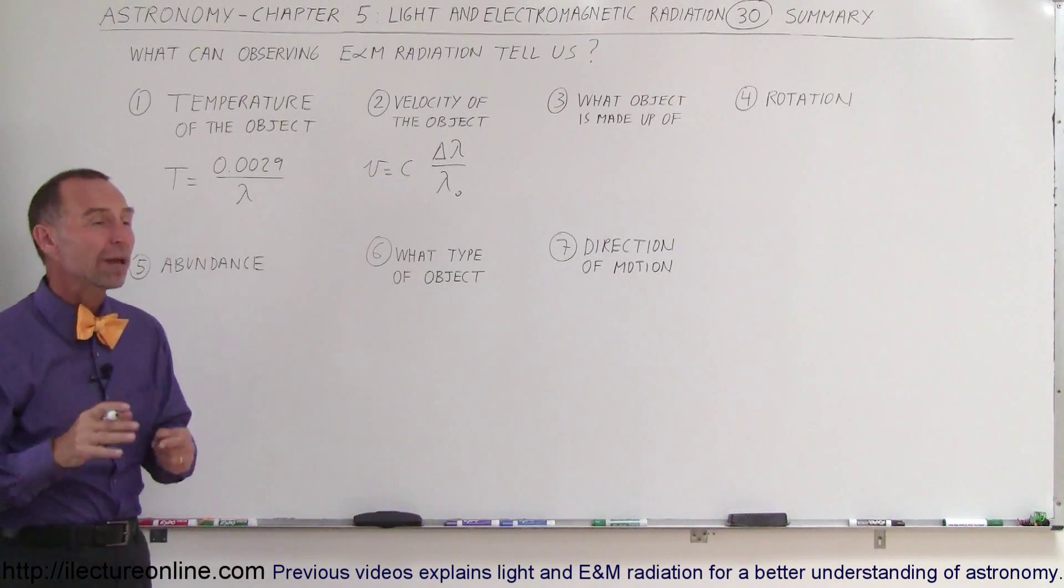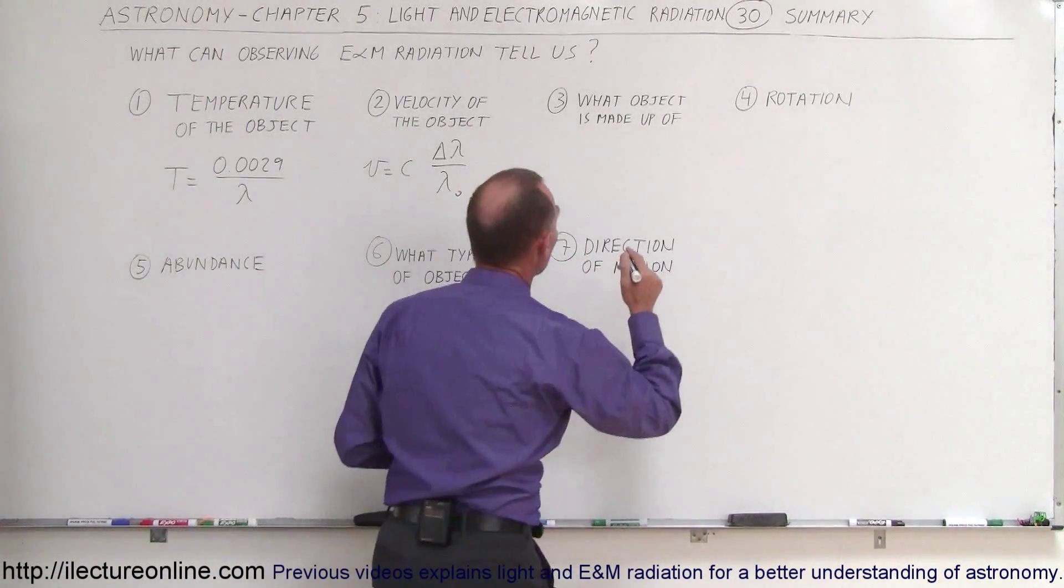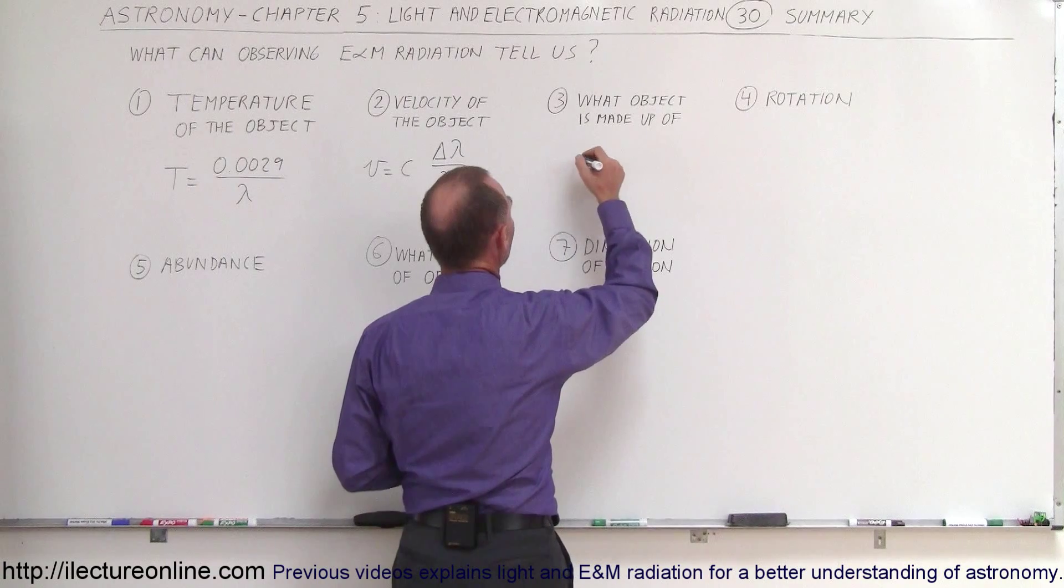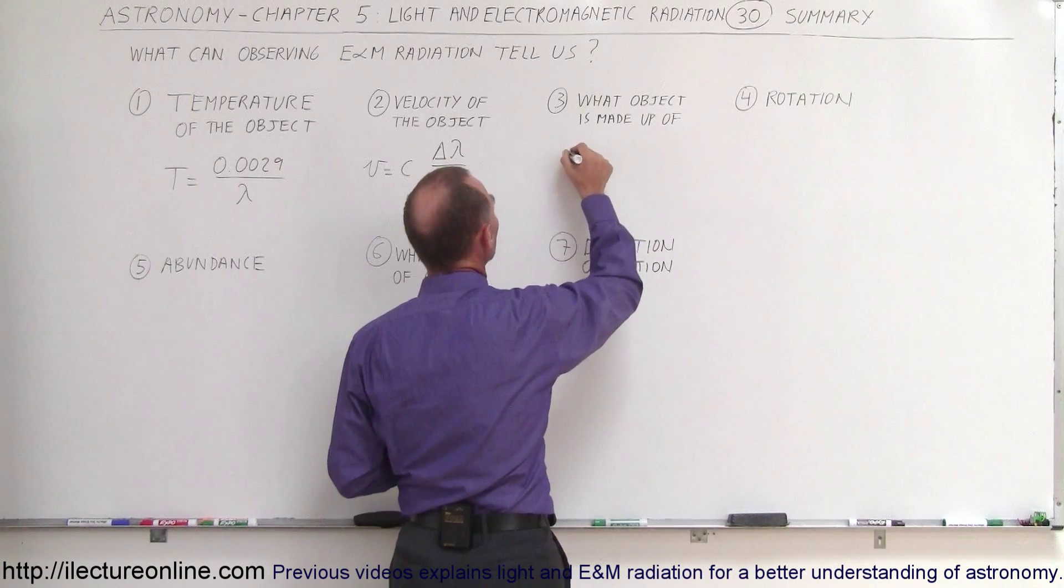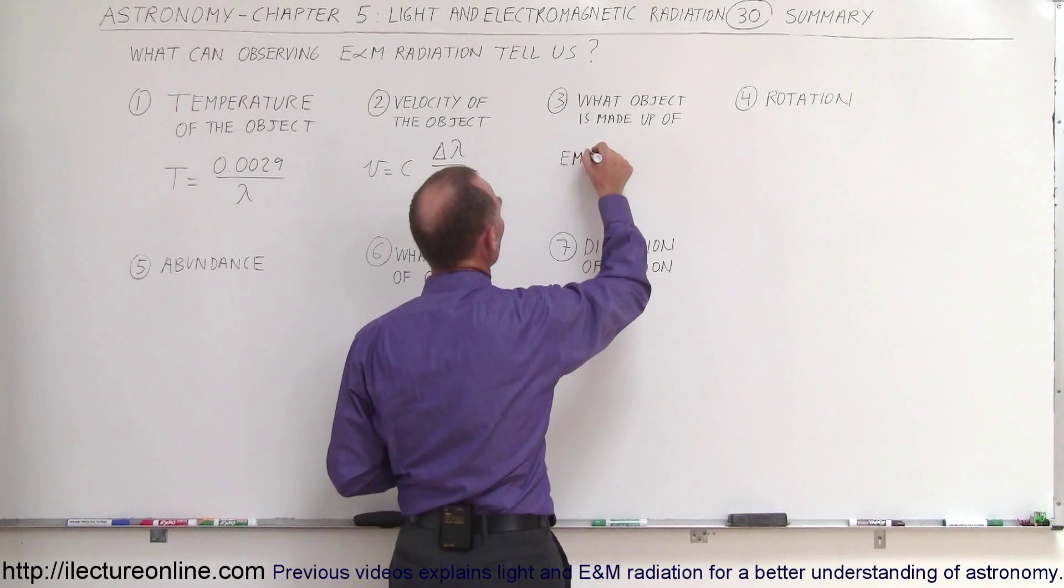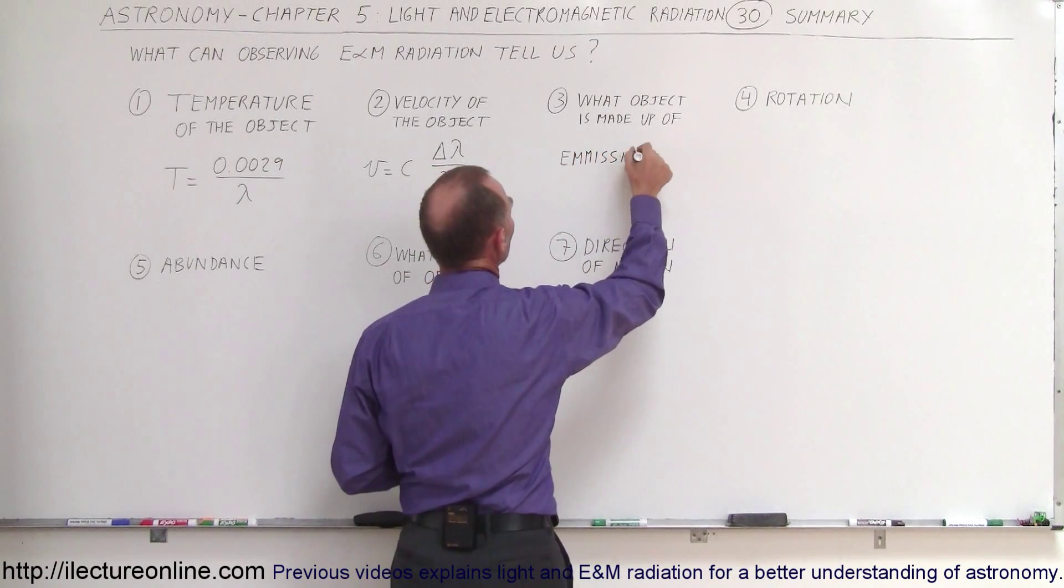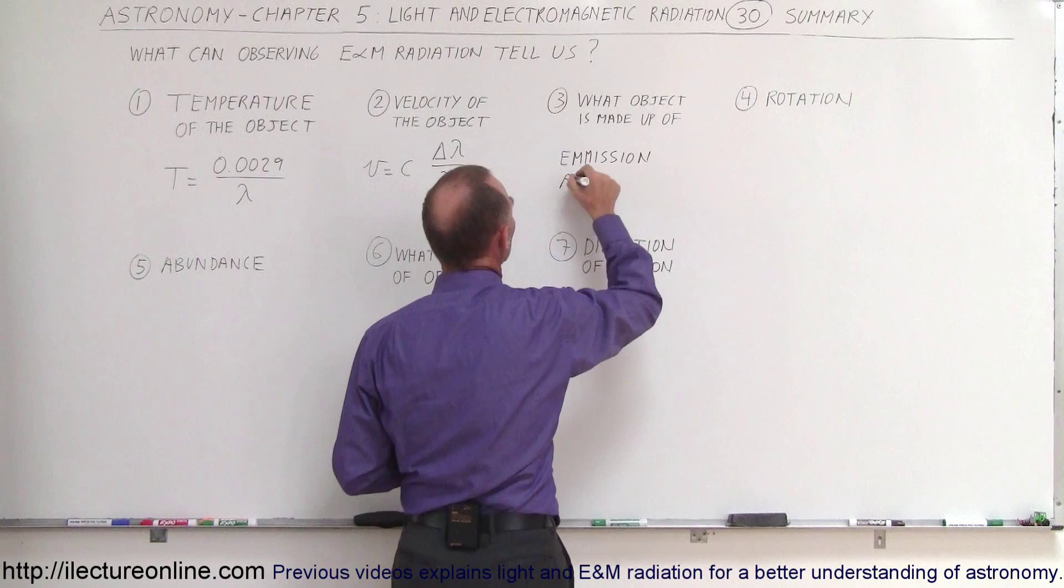Thirdly, we can tell what the object is made out of. We can say that the kind of elements in the object come from the emission spectrum or the absorption spectrum.